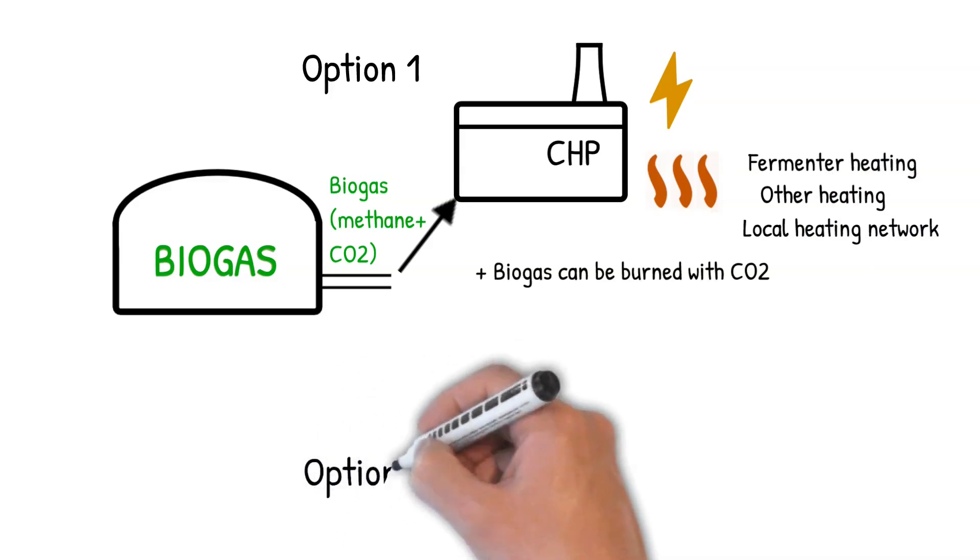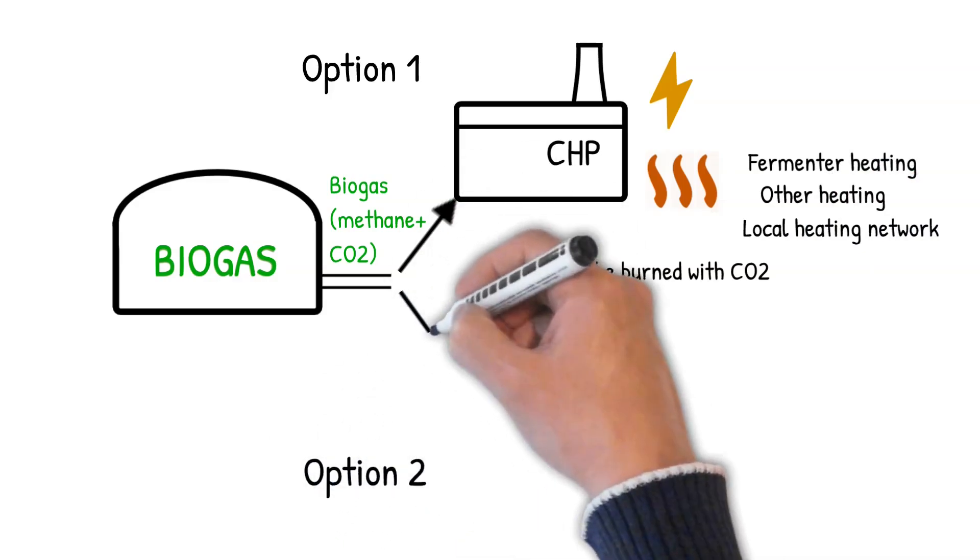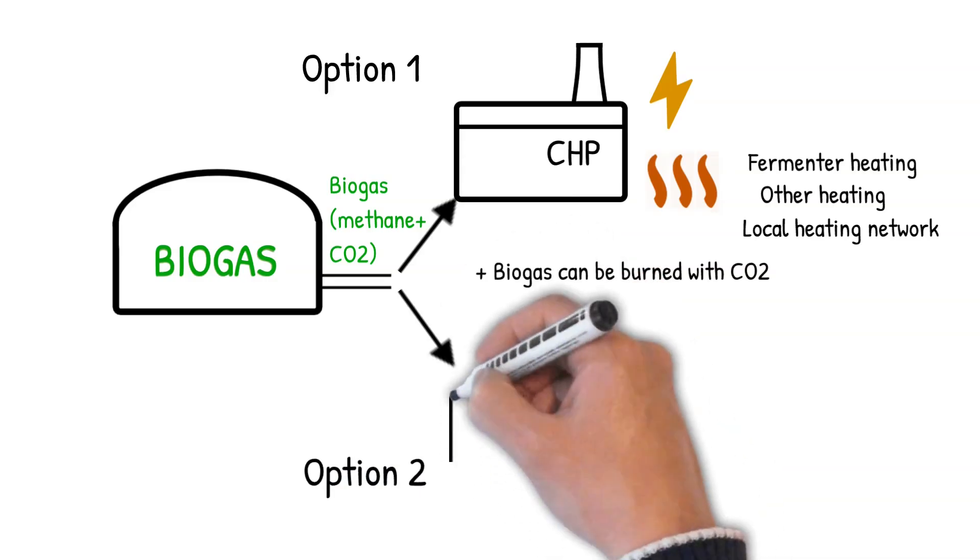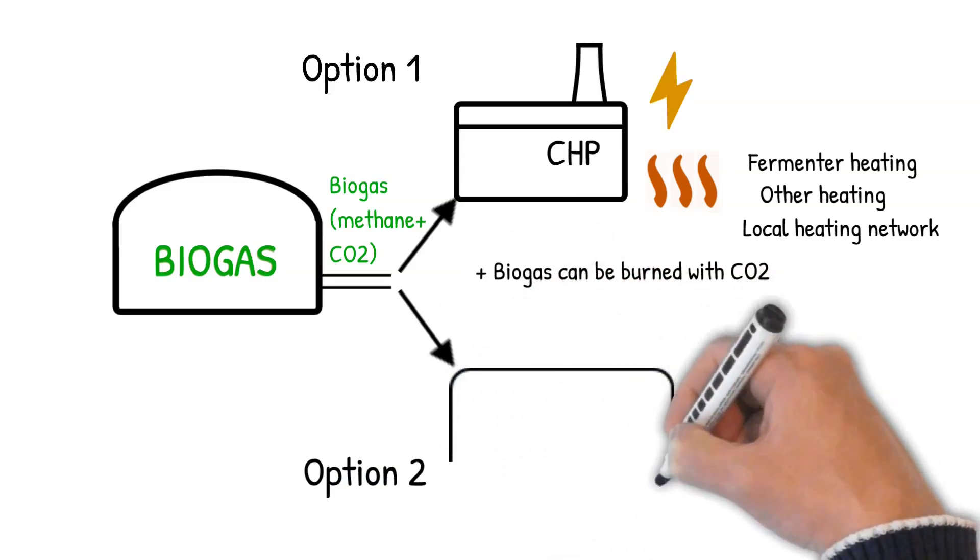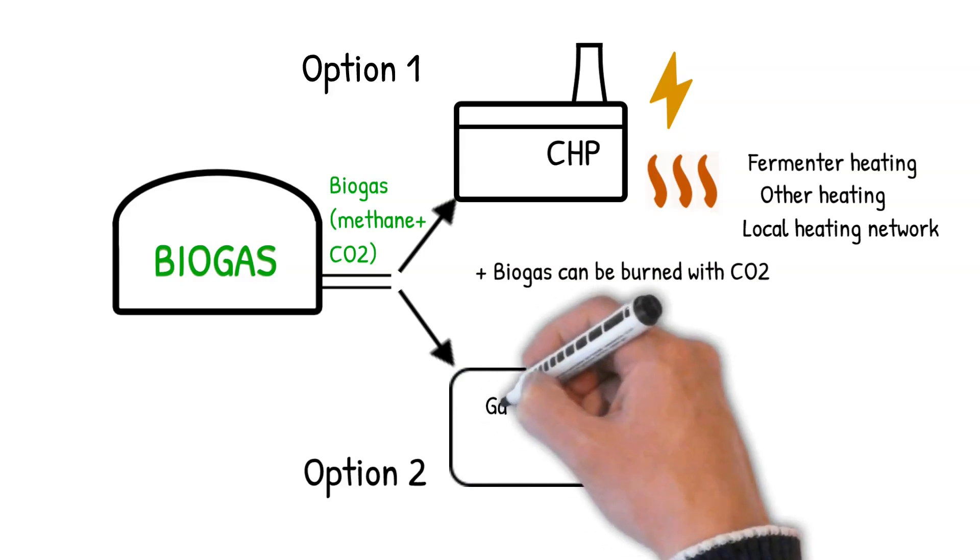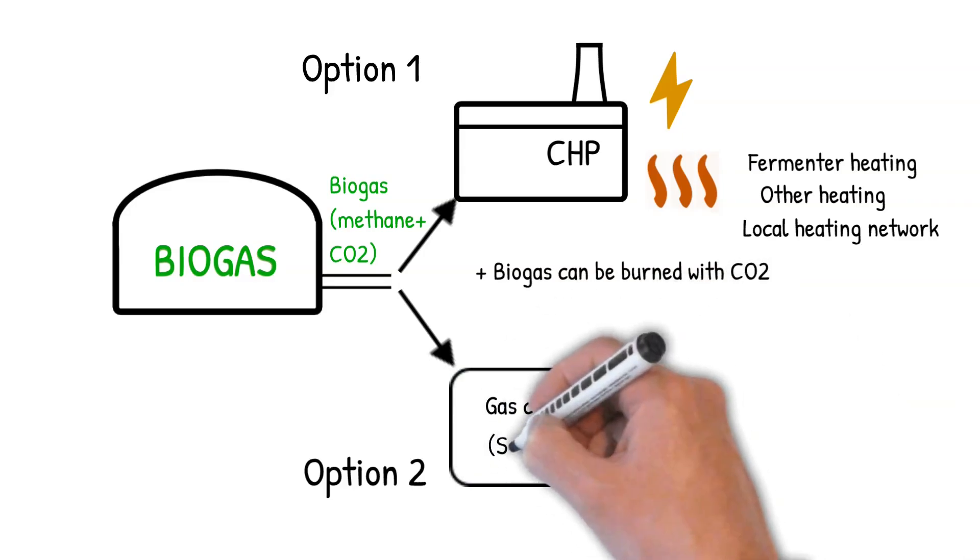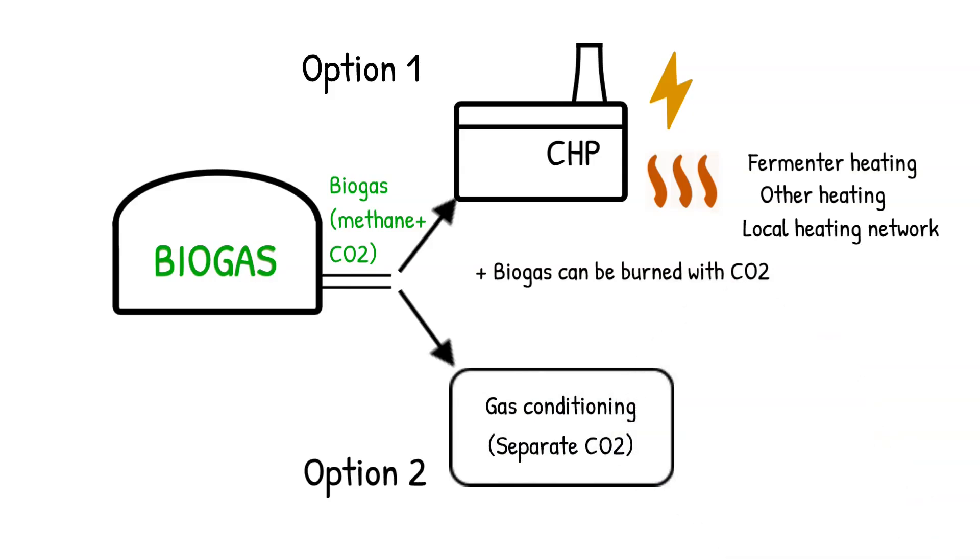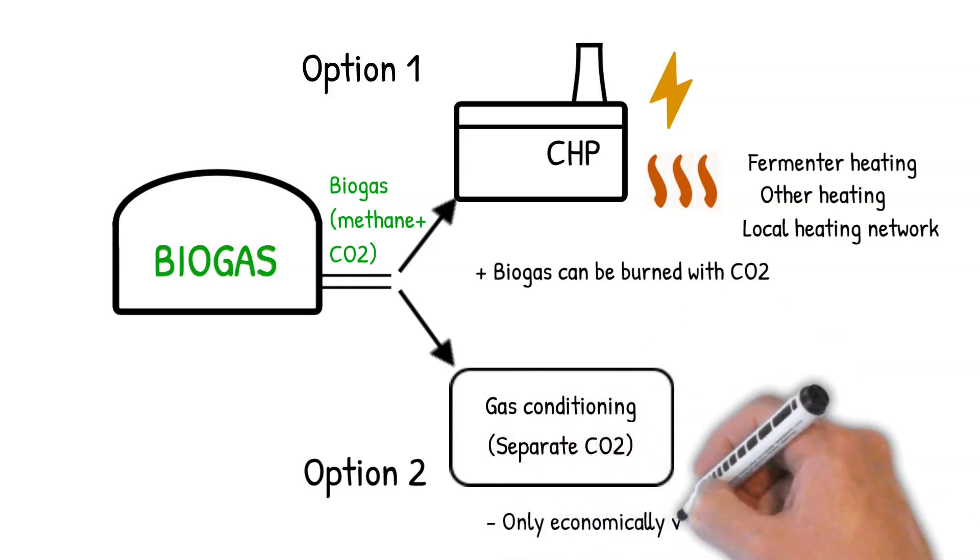The alternative, especially if there is not enough heat demand nearby, is to feed it into the gas grid. For this purpose, however, the biogas must be further upgraded. In particular, the CO2 must be separated. Since the processing is costly, this is only worthwhile for large plants.